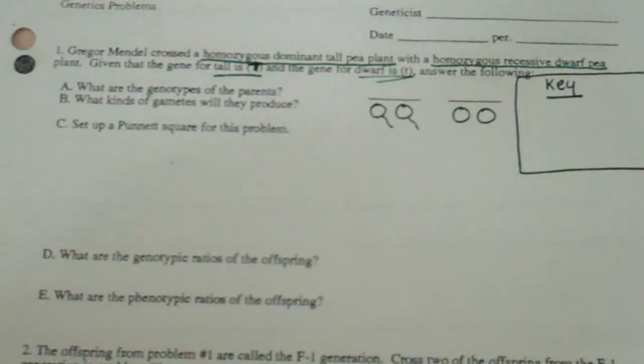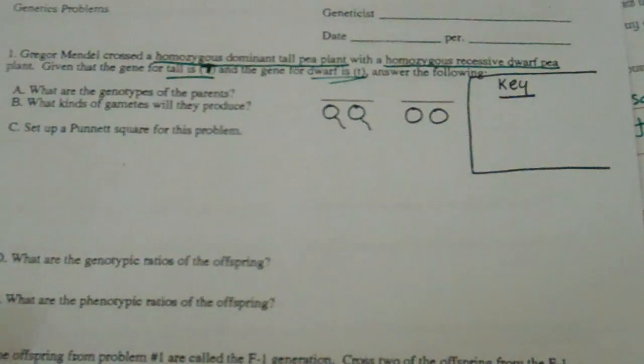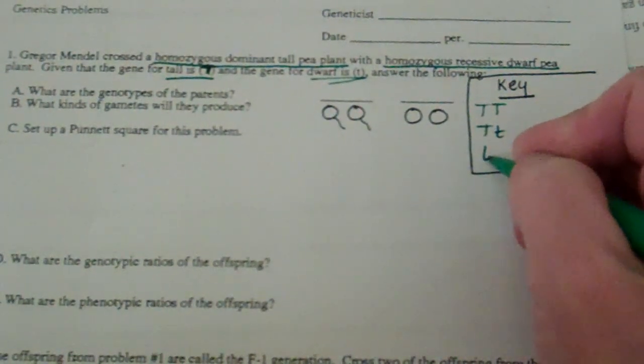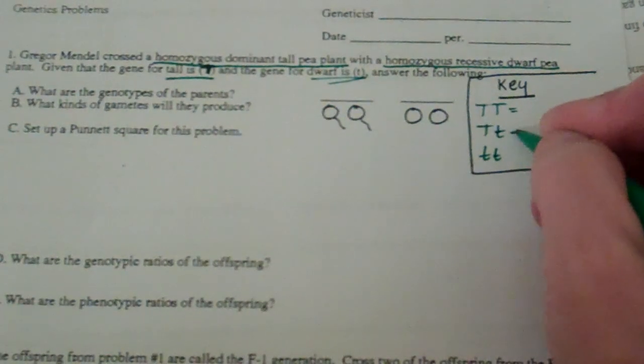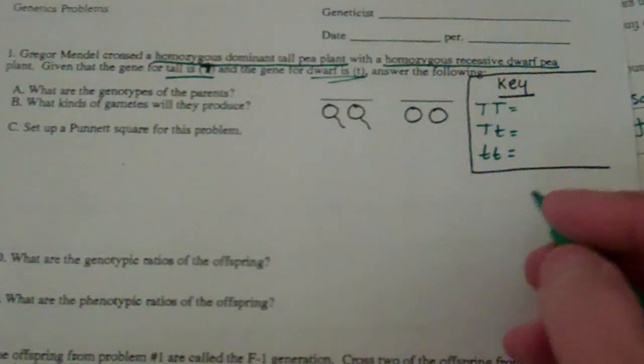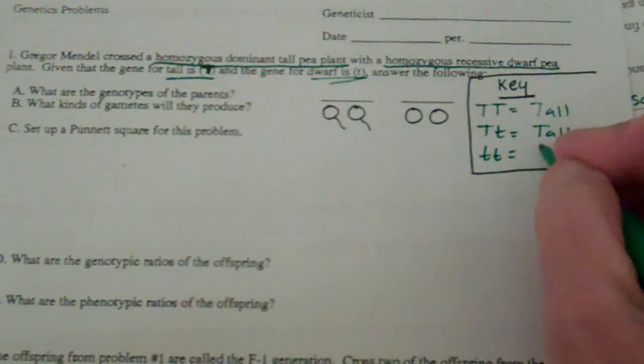I always like to start with my key. So big, big, big, little, little, little. Please do a three-part key for all of your genetics problems no matter what. The phenotype here will be tall: big T little t will be tall, little t little t is dwarf.